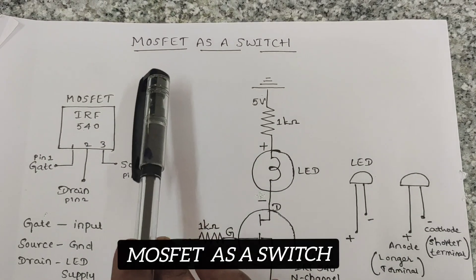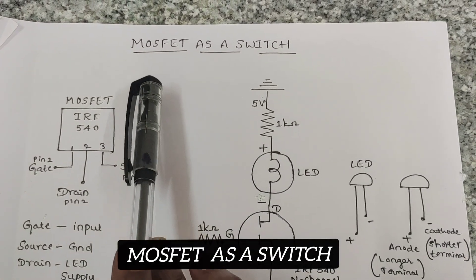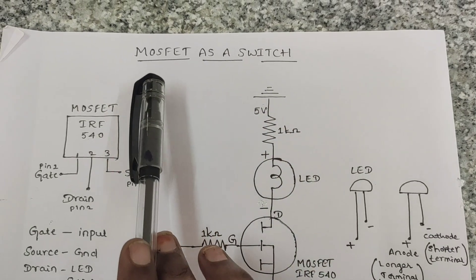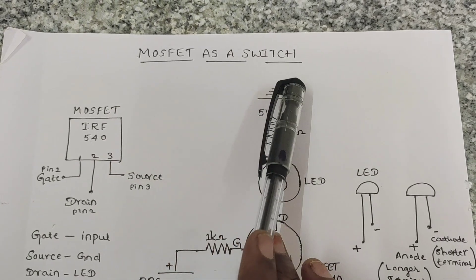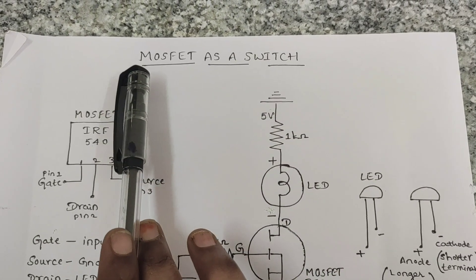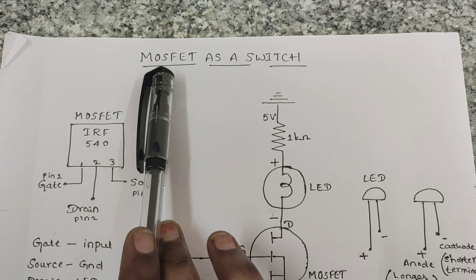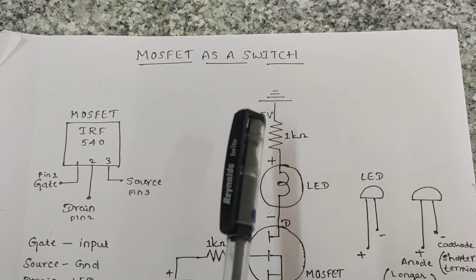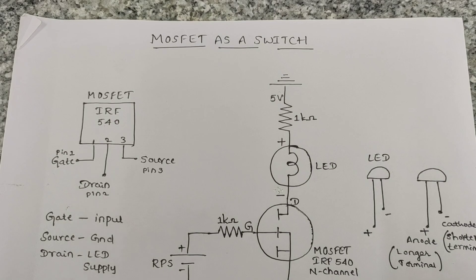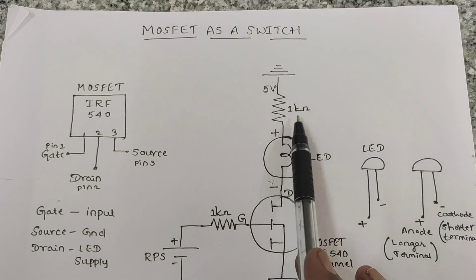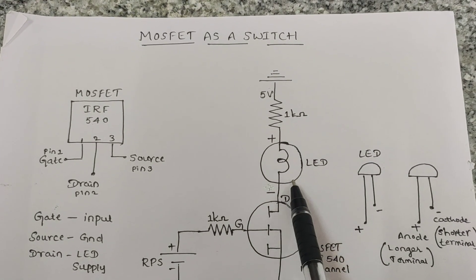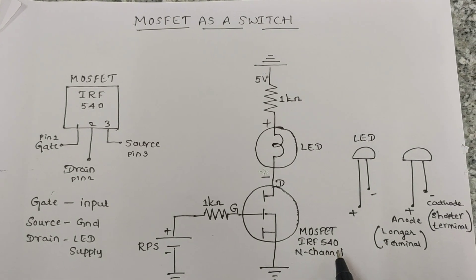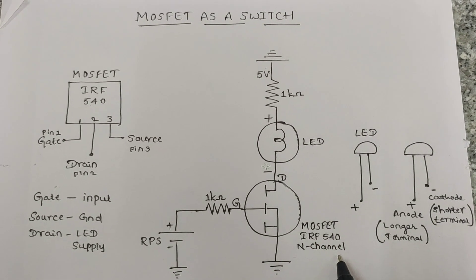Today we are going to conduct the experiment on MOSFET as a switch. MOSFET is a semiconductor device. MOSFET means Metal Oxide Semiconductor Field Effect Transistor. For this experiment we need the components: 1kΩ resistors, LED, and MOSFET — we are using IRF540N N-channel.